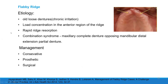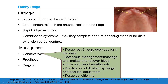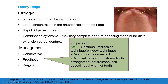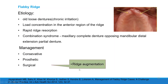Flabby ridge. Etiology includes loose-fitting dentures, load concentrated in the anterior region, rapid ridge resorption, or combination syndrome — a maxillary complete denture opposing a mandibular distal extension partial denture. Conservative management includes tissue rest for eight hours daily. Soft tissue management includes massage to stimulate blood supply and use of mouthwash. Denture modification by flange and occlusal adjustment or tissue conditioning. Prosthetic management includes impression with the window technique, centric occlusion record, posterior teeth arranged in the neutral zone, and reduced buccolingual width of teeth. Surgical correction includes augmentation of the ridge.